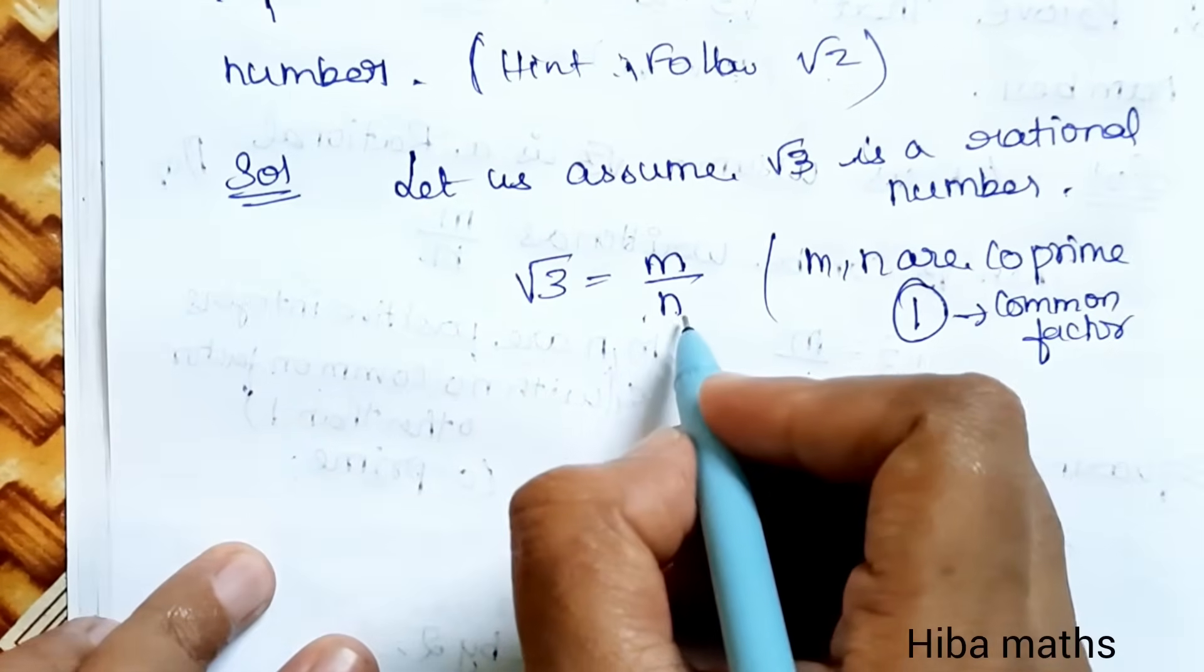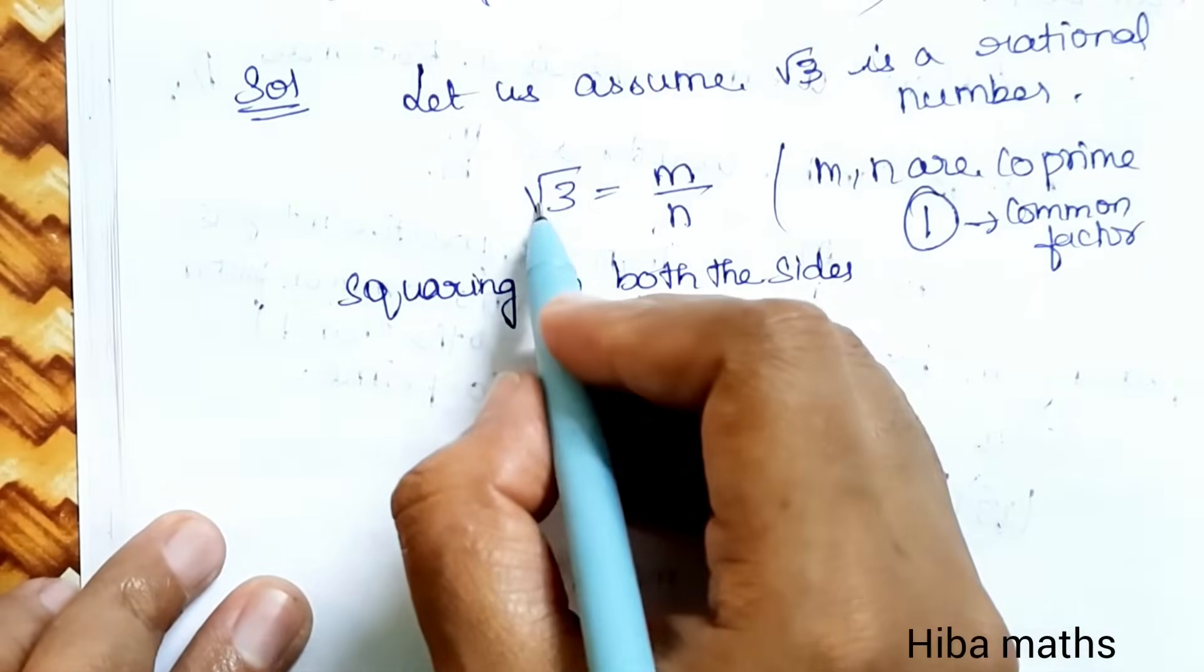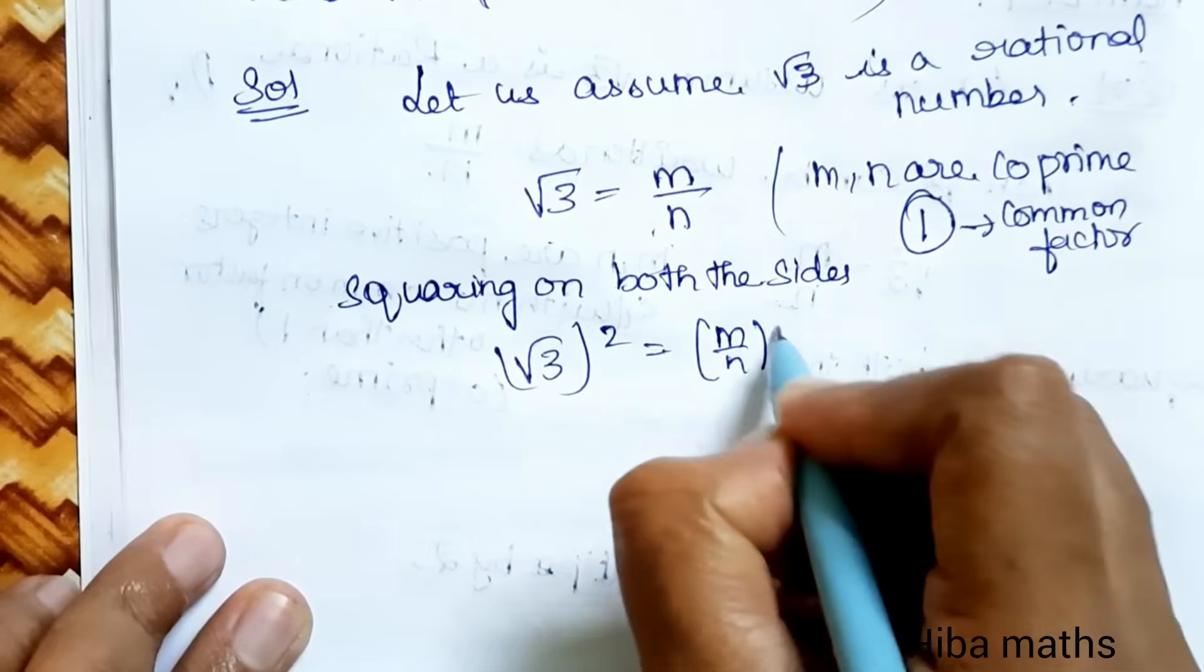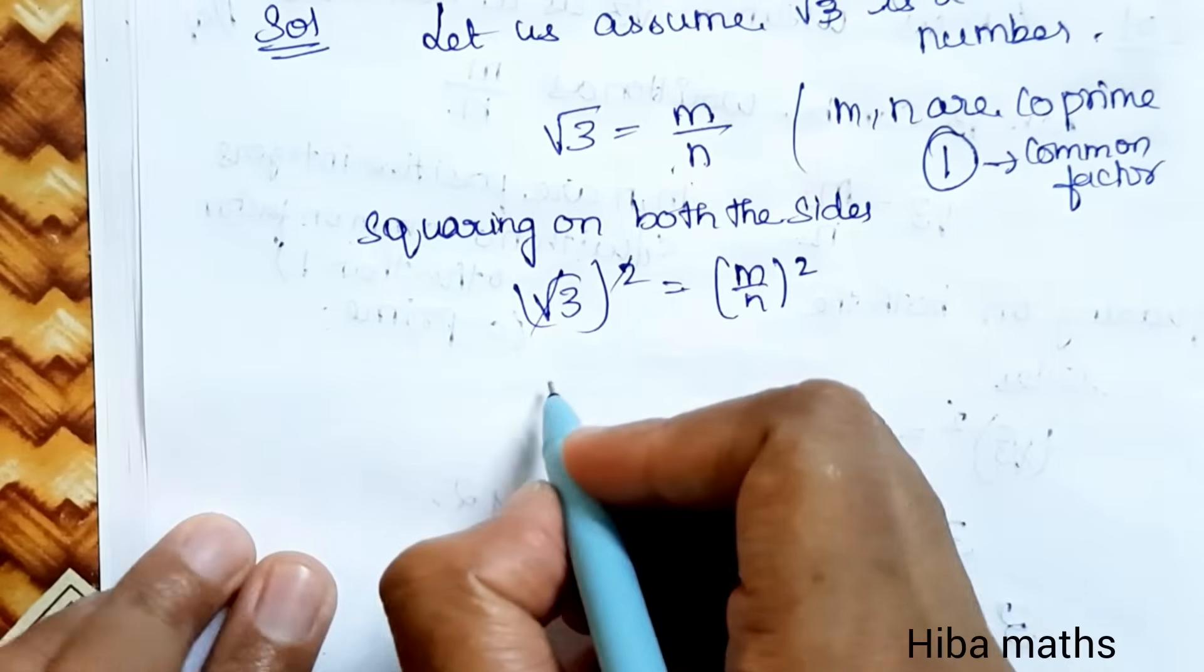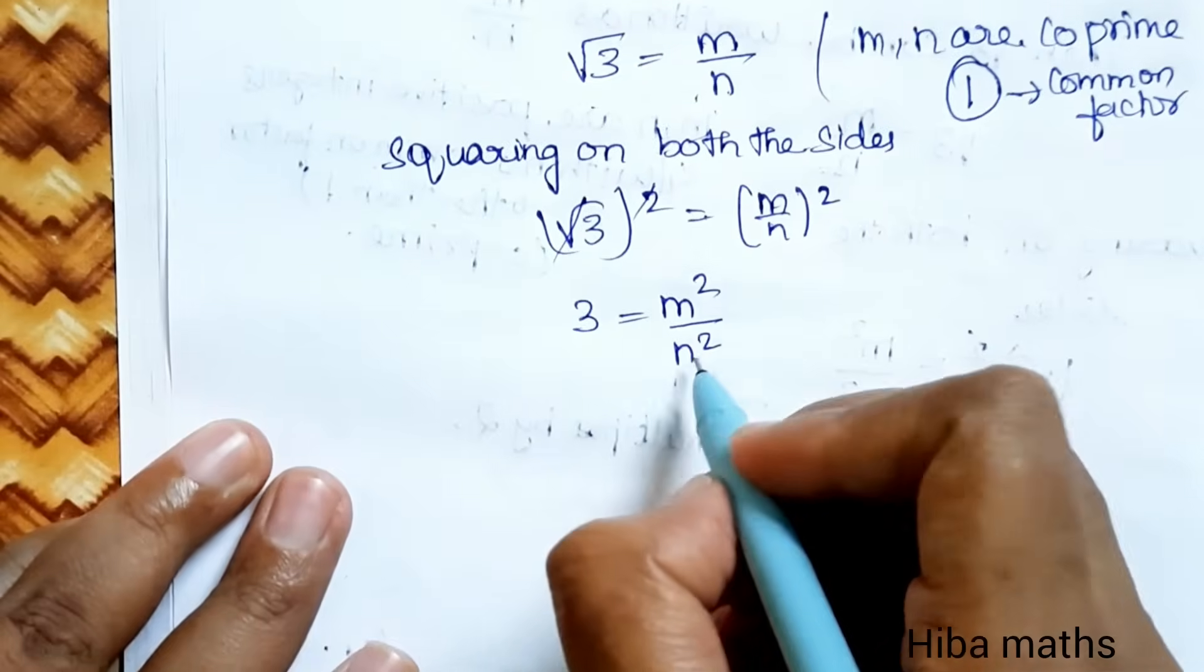This equation, we will square on both sides. If we square both sides, root 3 is square, M by N is square. If there is square root of square, then cancel. 3 equals M square by N square.